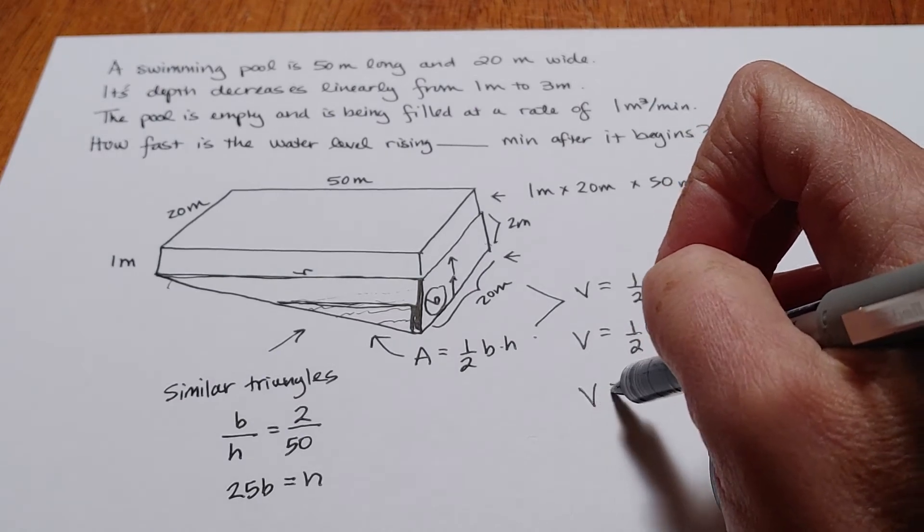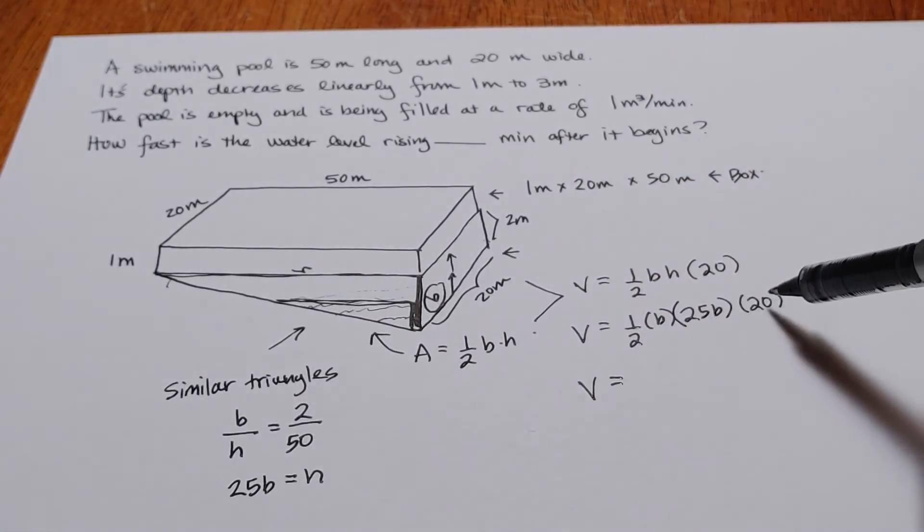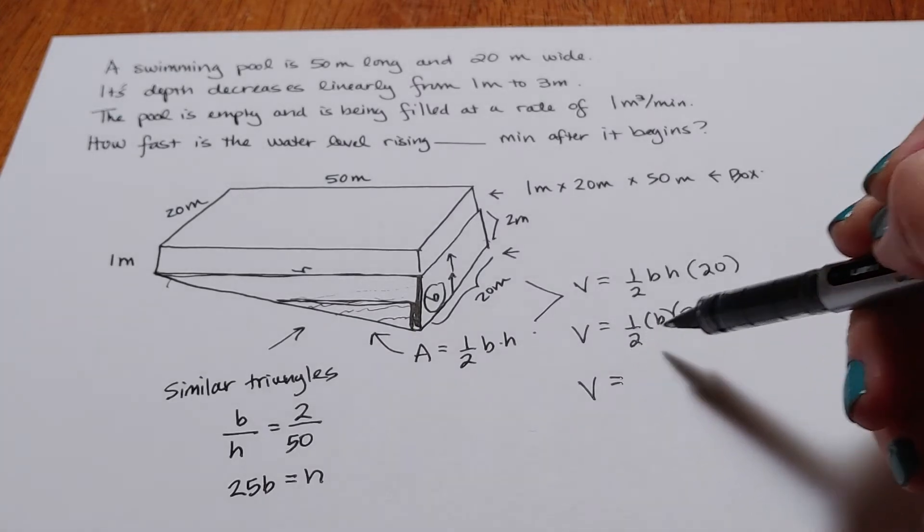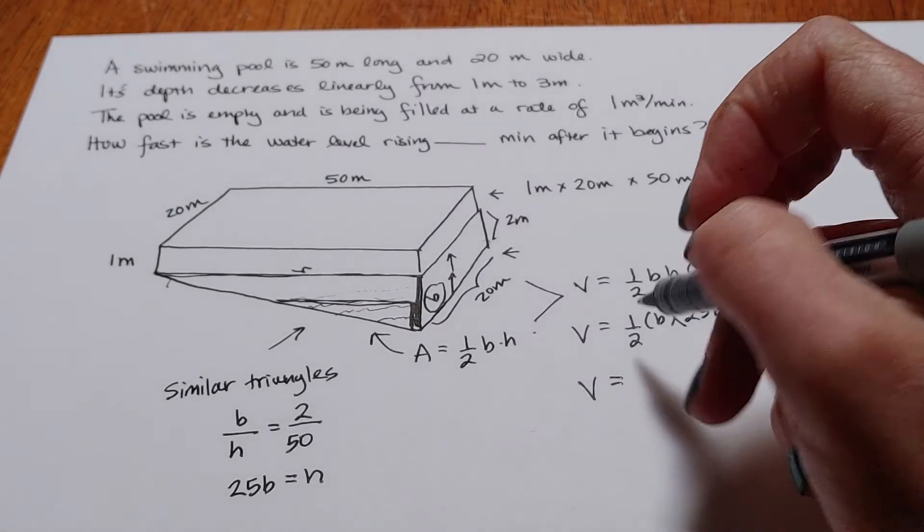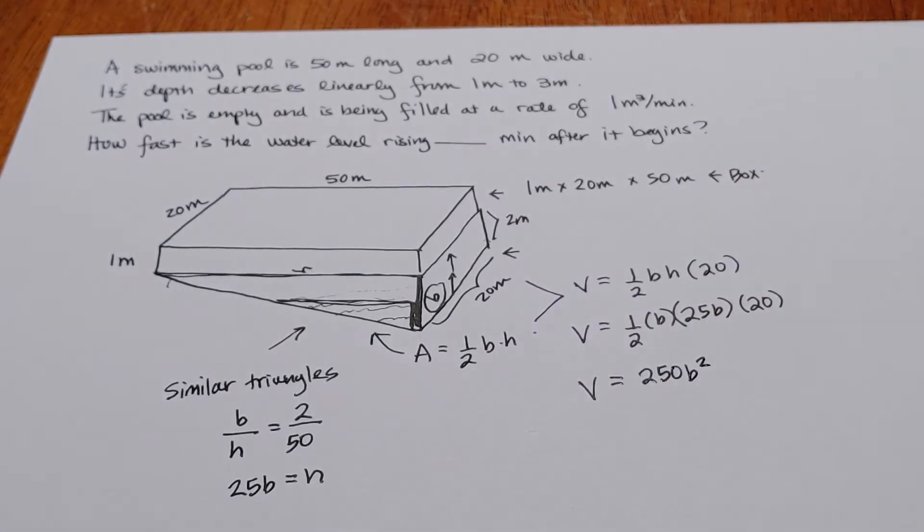And clean this up a little bit and it looks like I'm going to have 25 times 20, but also by a half. So that should be 250B squared.